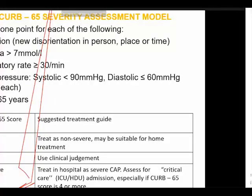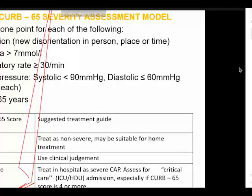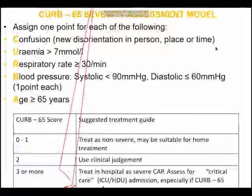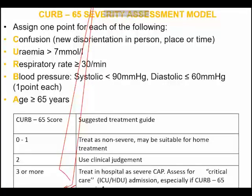After calculating the CURB-65 score: a score of 0 to 1 — treat at home. A score of 2 — use clinical judgment on whether to admit or treat at home depending on the patient's condition. A score of 3 or more — treat as severe, and the patient likely needs ICU and other intensive management.